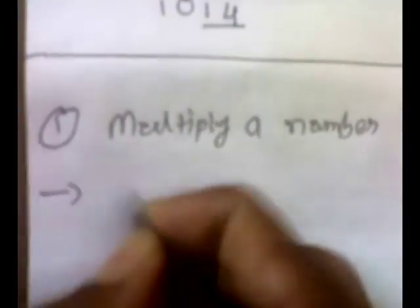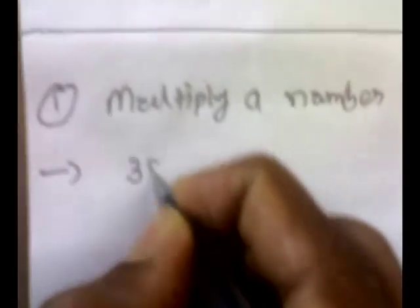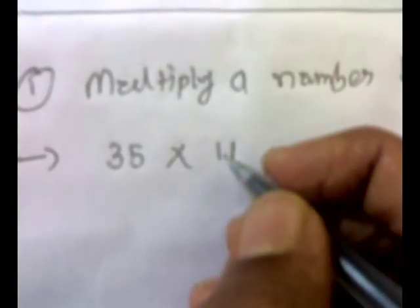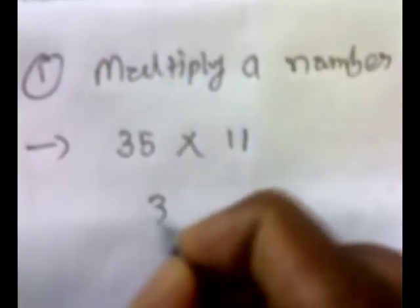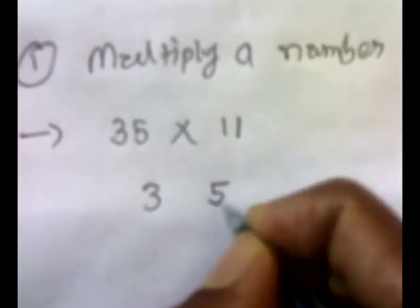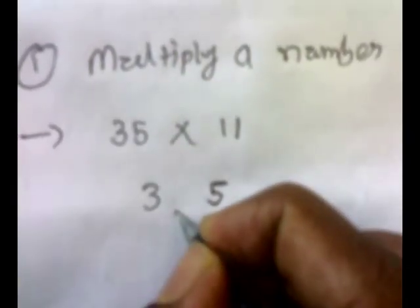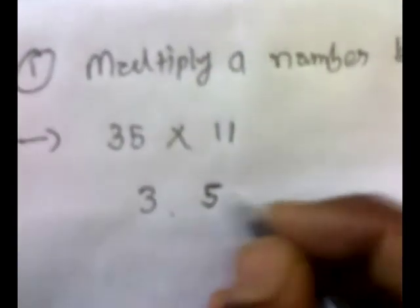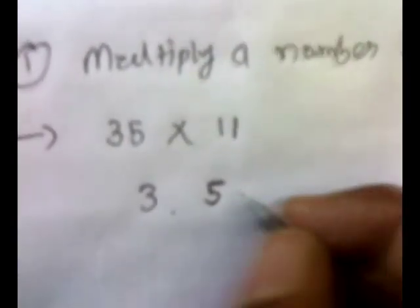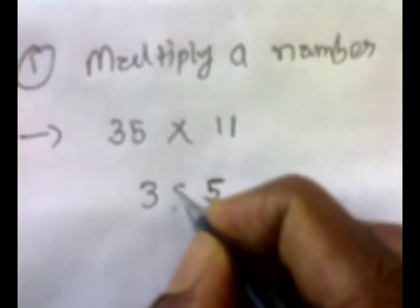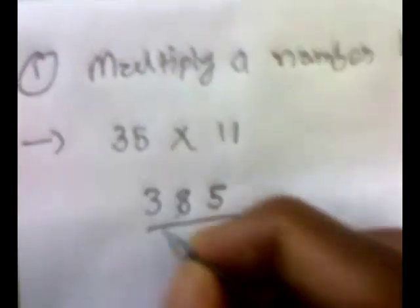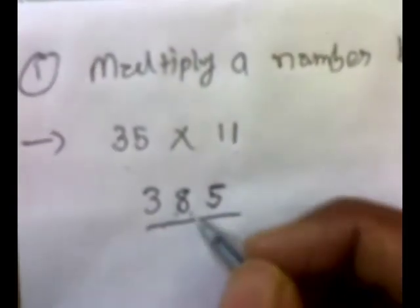Let's take an example. Suppose we have to find out 35 multiplied by 11. The shortcut method is: put 3 and 5 as it is, with one spot in between them, and just add these two digits. 3 plus 5 is 8, and put the answer here. We will get the answer, so 35 into 11 is 385.